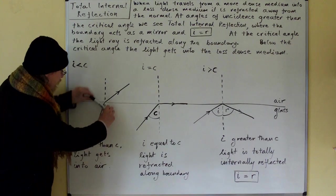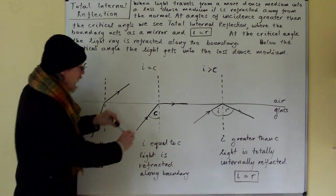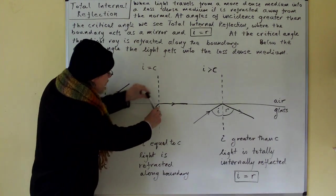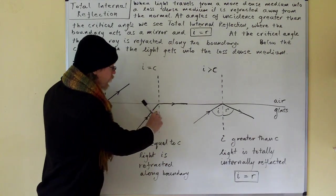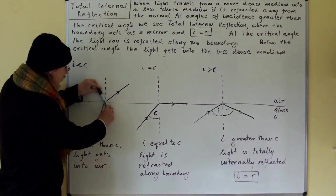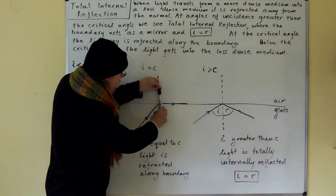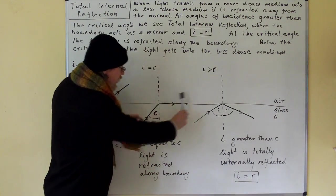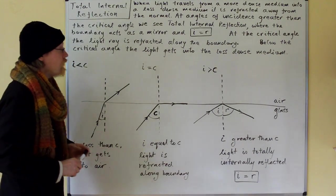So here we're seeing refraction. We're being bent away from the normal. There will come a point where you're bent so far away from the normal that you're actually being refracted along the boundary. Here we're getting bending away from the normal. There's more bending away from the normal. Now here you see that we're being refracted along the boundary.